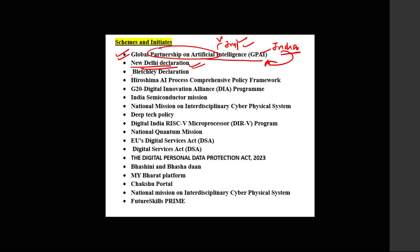Also important are the Bletchley Declaration and the Hiroshima AI Process — both are about regulating AI. AI regulation is becoming a very important concern for the entire world, so definitely prepare this. Other important topics: G20 Digital Innovation Alliance, India Semiconductor Mission, National Mission on Interdisciplinary Cyber Physical Systems, deep tech policy, and Digital India.